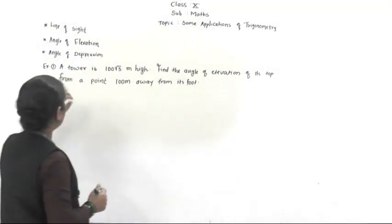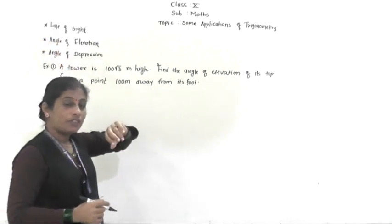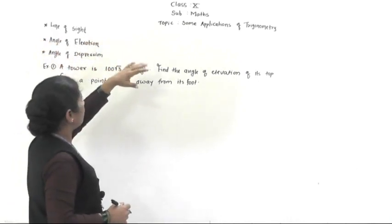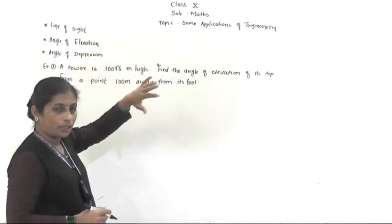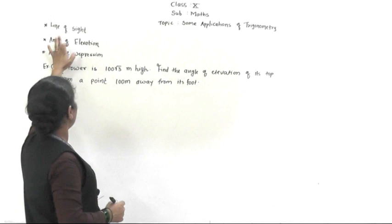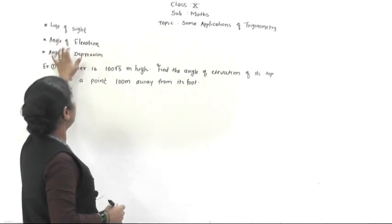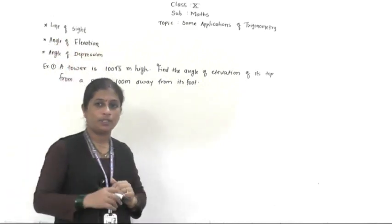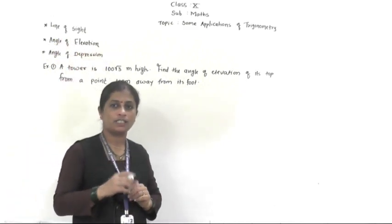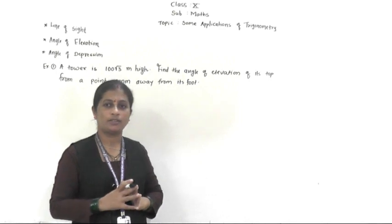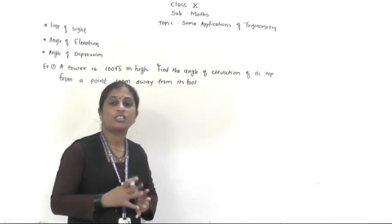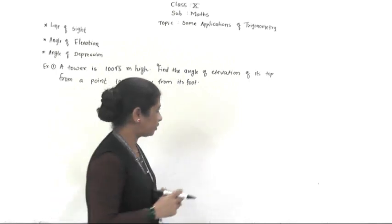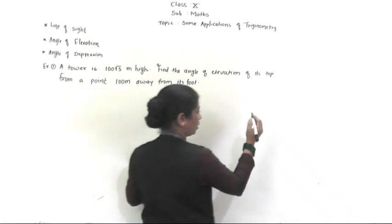The terms related to this topic — some applications of trigonometry — are line of sight, angle of elevation, and angle of depression. So first we will see what is angle of elevation, what is angle of depression, and line of sight.